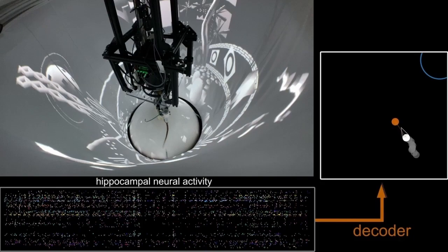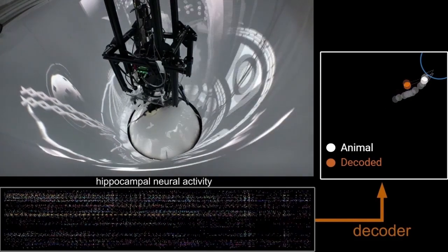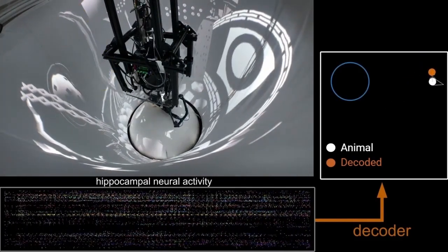Next, we validated the decoder by placing the animal back in the same arena and repeating the task from phase one. Here, we can see the real-time decoded location during the experiment.